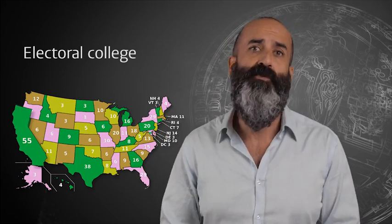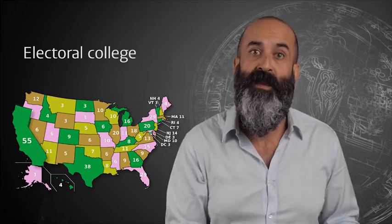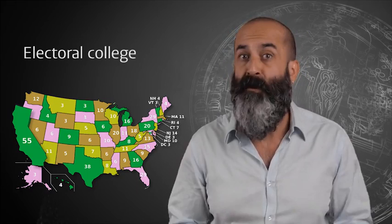California, on the other hand, has the largest population, so it has 53 House seats. It automatically gets those two senators, so it has 55 electoral college votes. Americans do not vote for their president, they vote for an electoral college of their regional state, who then votes for the president.